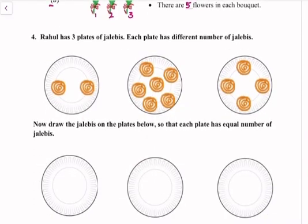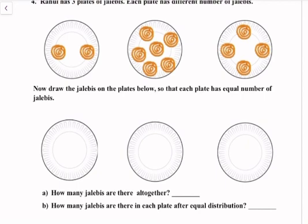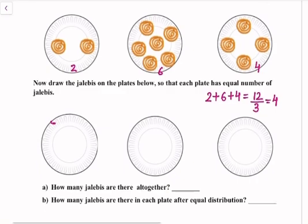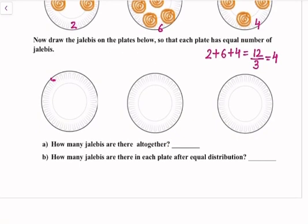Question number 4: Rahul has three plates of jalebi. Each plate has a different number of jalebi — the first plate has 2, the second has 6, and the third has 4. Draw the jalebi on the plates so that each plate has an equal number. The total number of jalebi is 2 + 6 + 4 = 12. We divide 12 by 3, so there are 4 jalebi in each plate.